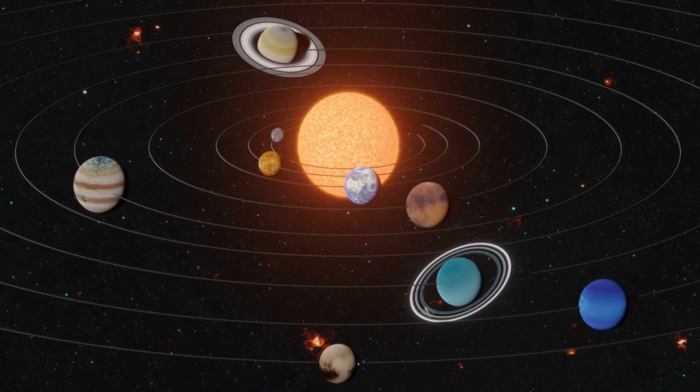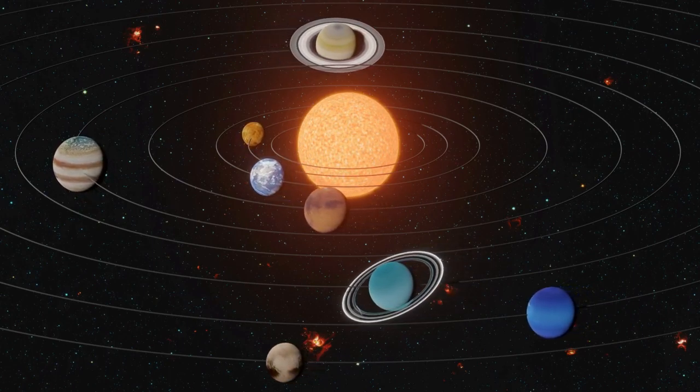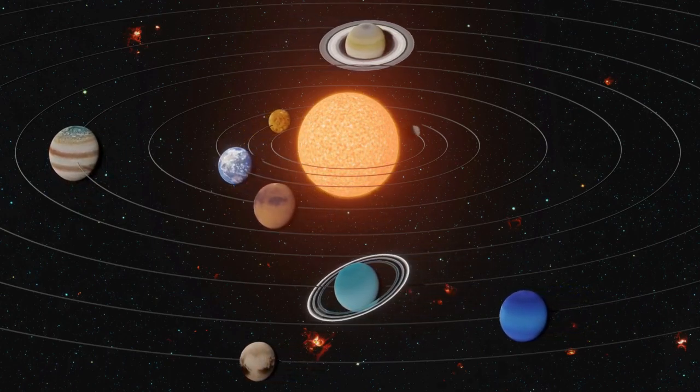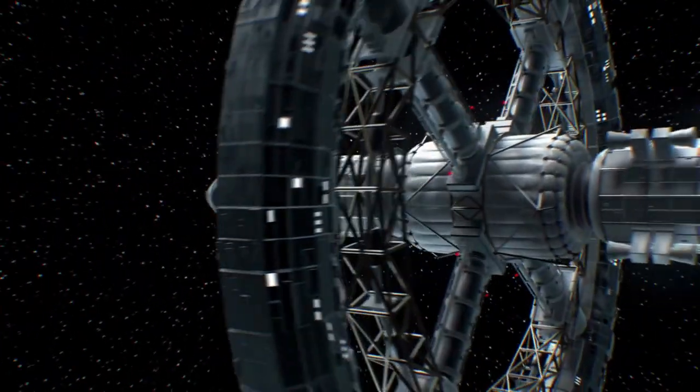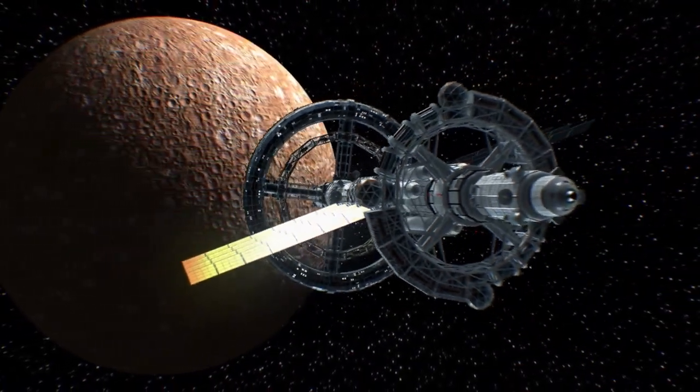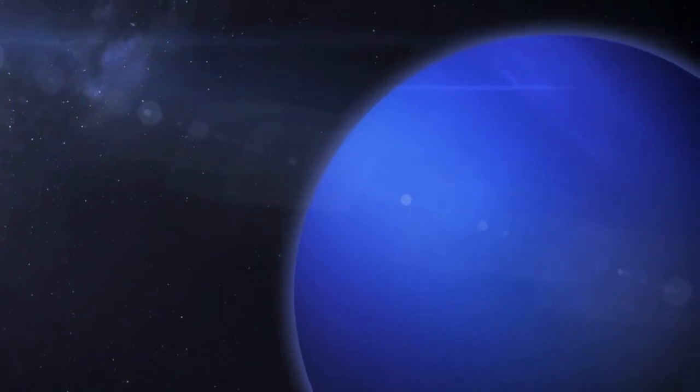In conclusion, our solar system is a vast and fascinating place with eight unique planets that each have their own distinct characteristics and features. From Mercury, the smallest planet closest to the sun, to Neptune, the farthest planet from the sun and the windiest planet in the solar system, each planet has its own story to tell.